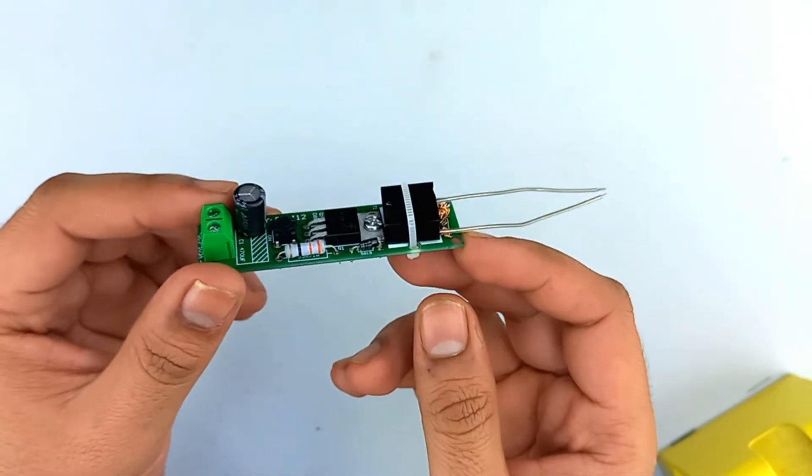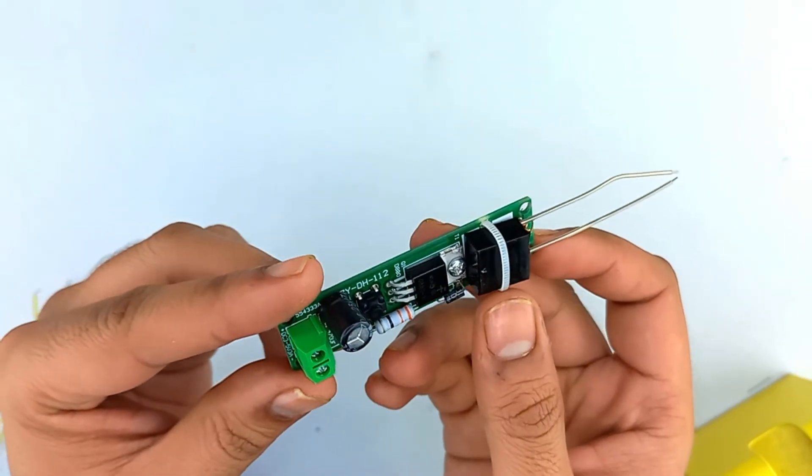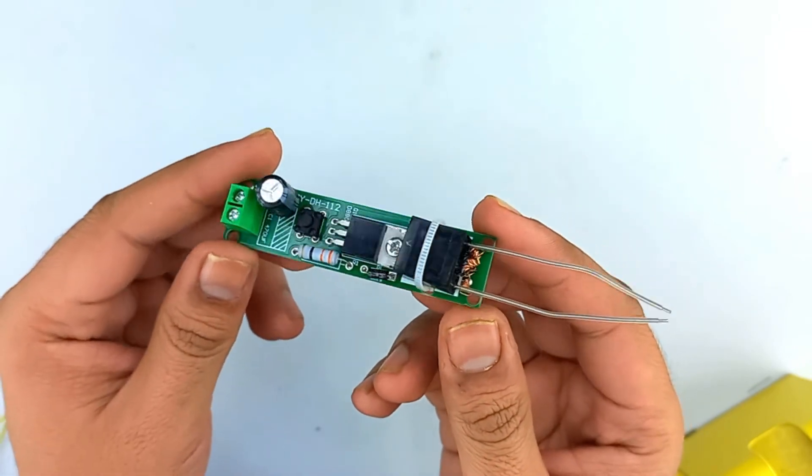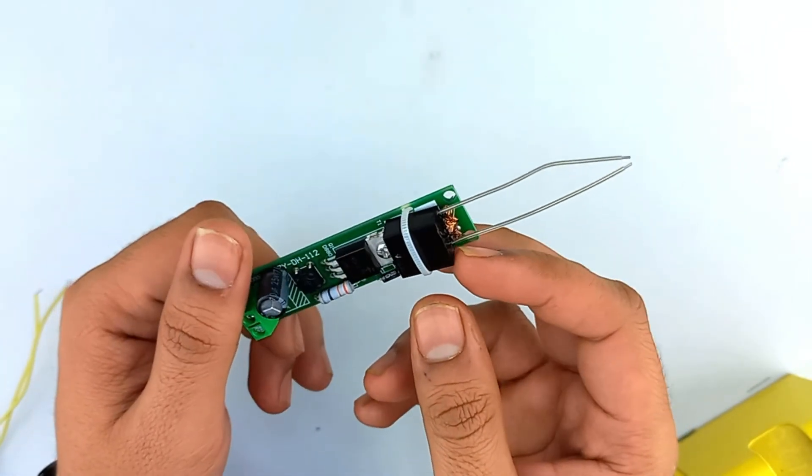So we are done with the soldering part. Now let's power in the supply, 3.7 lithium battery, and let's see the arc.